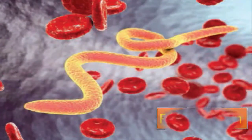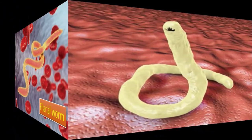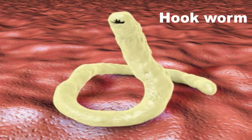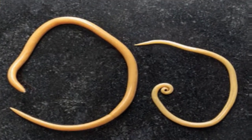What you are seeing now are filarial worms, which are endoparasites — they live inside our body, near the red blood cells. This is a hookworm, which also lives inside our body. Most Aschelminthes are endoparasites; they live inside the animal or human body and also cause disease.